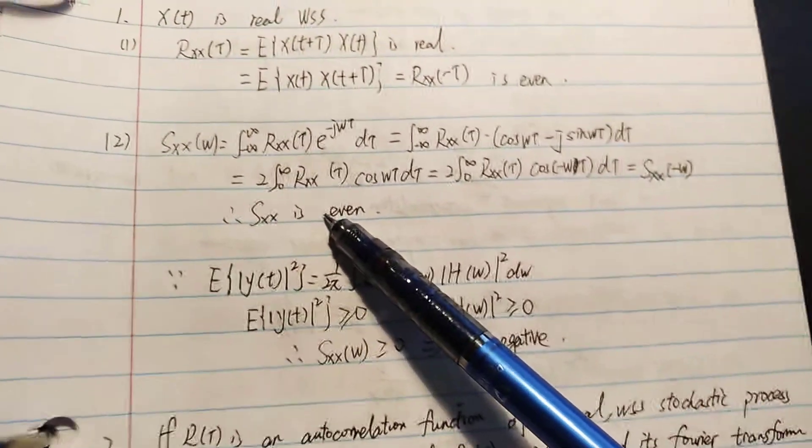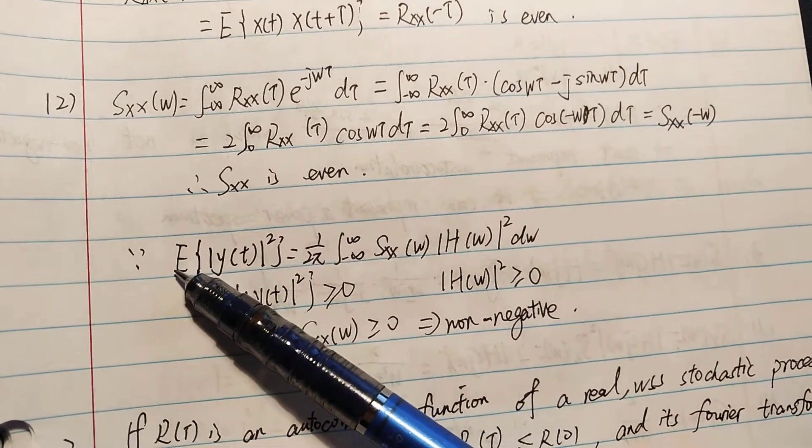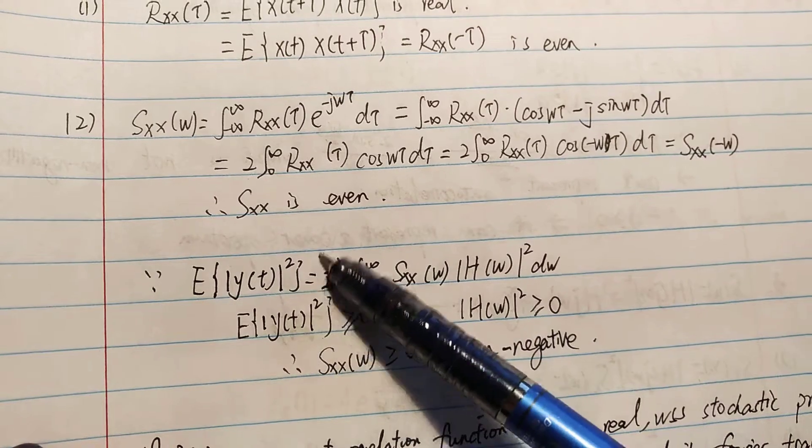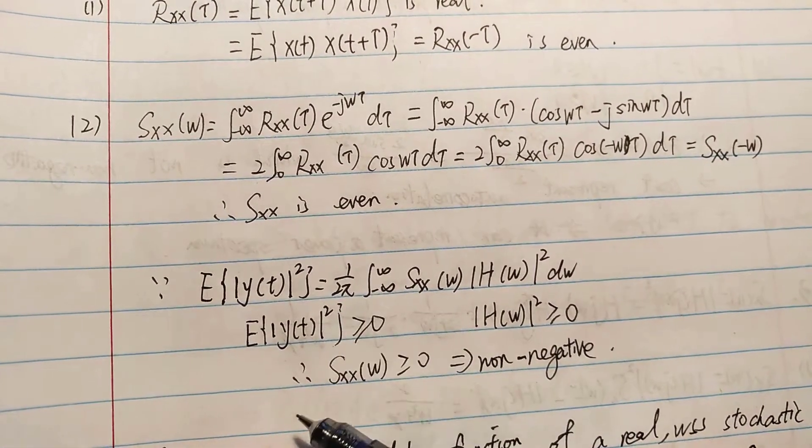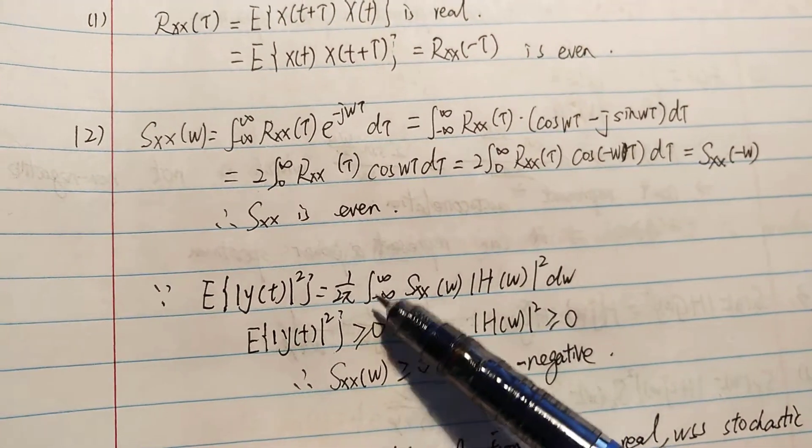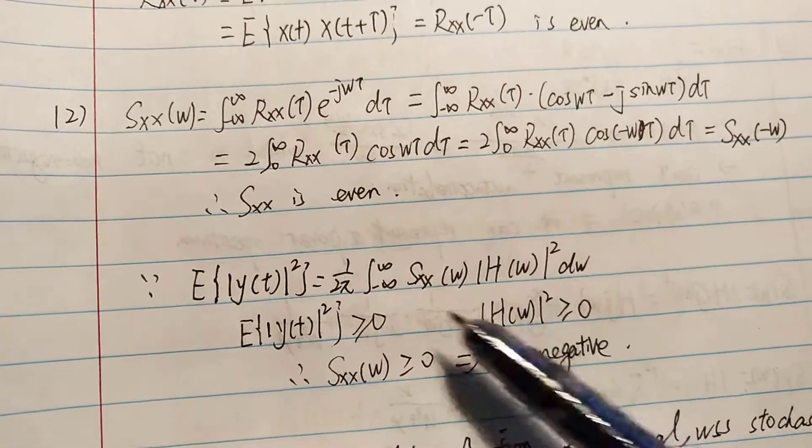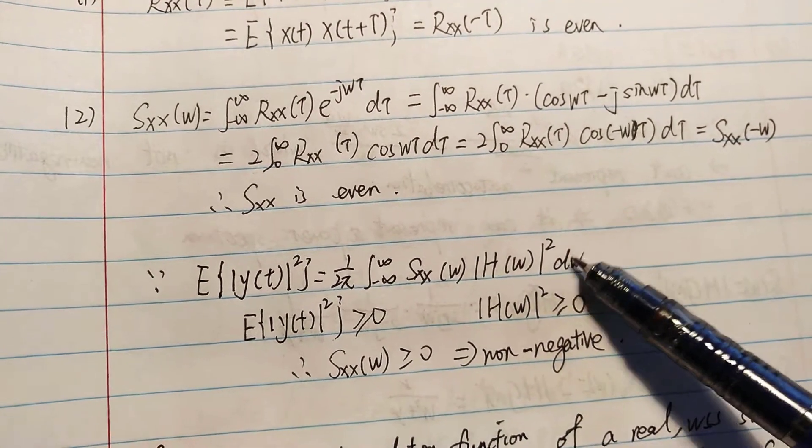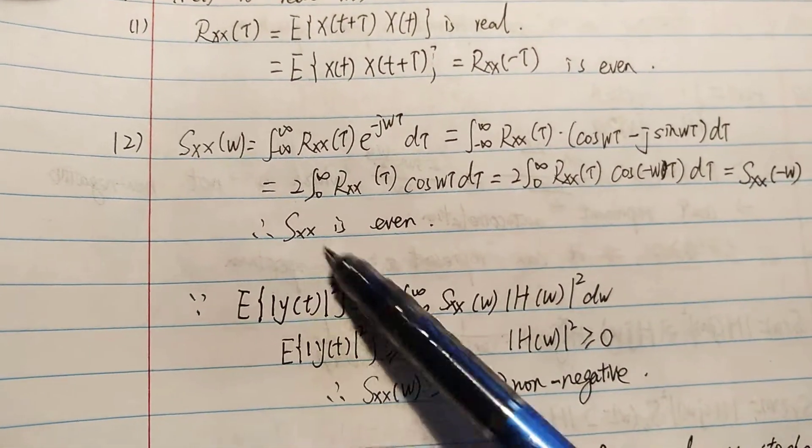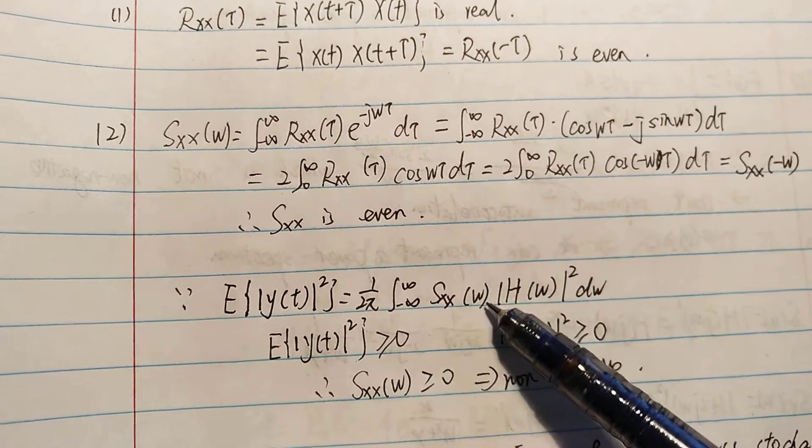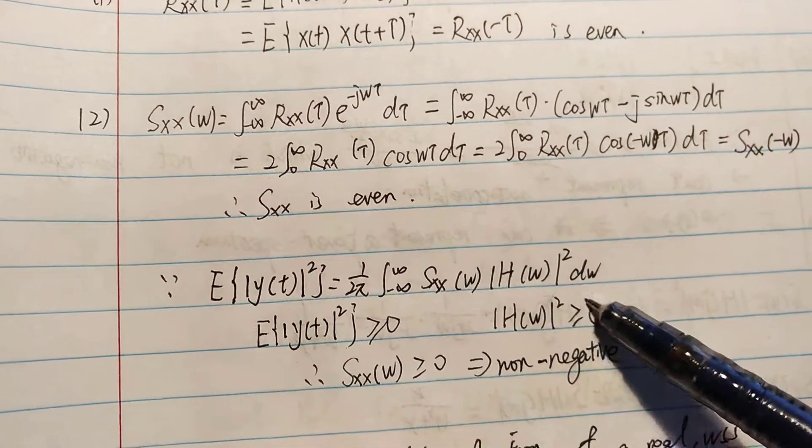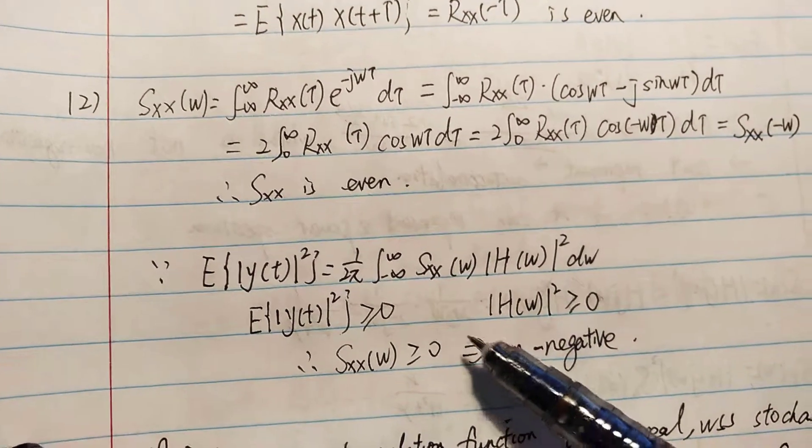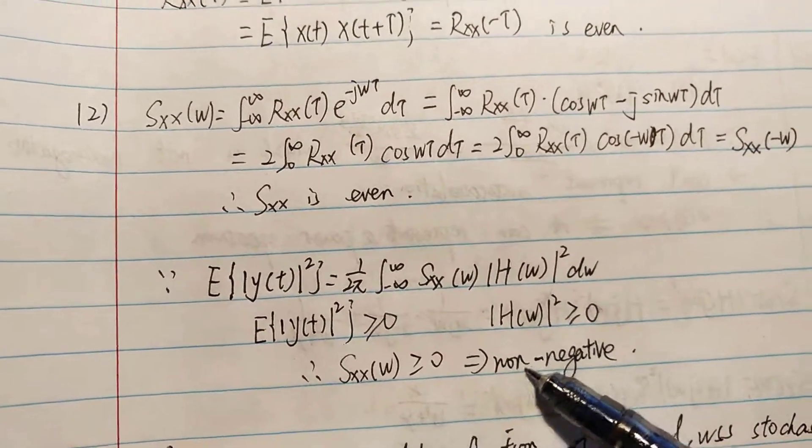And because E of the absolute value of Yt to the power of 2 equals to 1 divided by 2 pi from minus infinity to infinity, Sxx omega times absolute value of H omega to the power of 2 d omega. This is greater than 0. And this is also greater than 0. So we can easily get Sxx omega is greater than 0, which means Sxx is non-negative.